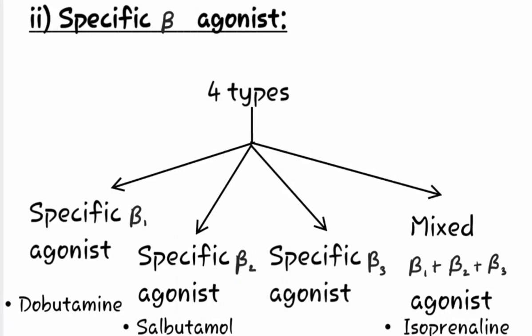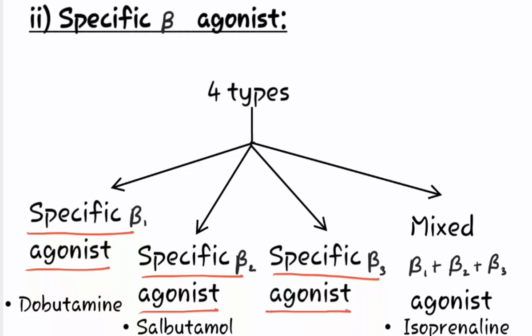Specific beta agonists can again be classified into four types: first is specific beta-1 agonist, second is specific beta-2 agonist, third is specific beta-3 agonist, and fourth is mixed beta-1, beta-2, and beta-3 agonist. The example of specific beta-1 agonist is dobutamine. The example of specific beta-2 agonist is salbutamol. The example of specific beta-3 agonist is still under research and is coded as BRL34377.